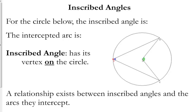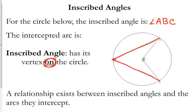On this circle, the inscribed angle is angle ABC. This angle right here is what we call inscribed — it's inside the circle, and its vertex is on the circle.